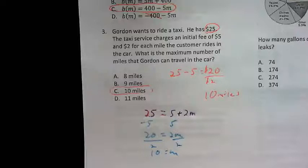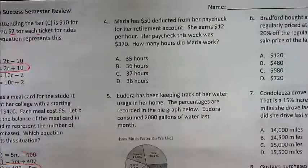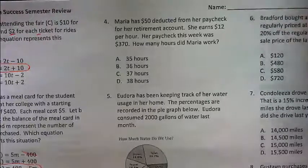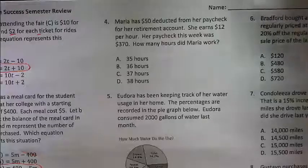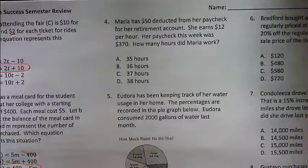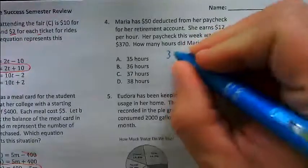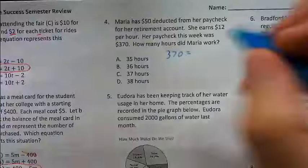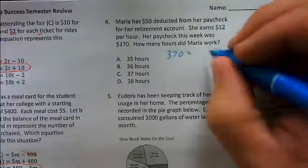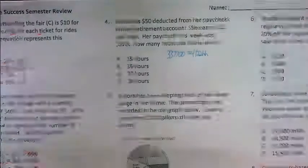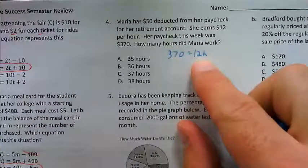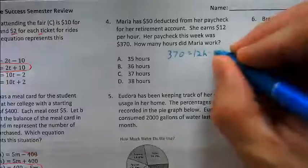There is more than one way to do these problems. Number four: Maria has 50 dollars deducted from her paycheck for her retirement account. She earns 12 dollars per hour, and her paycheck this week was 370 dollars. How many hours did Maria work? Setting this up as an equation: 370 equals 12 times h minus 50, since 50 dollars is being taken out.